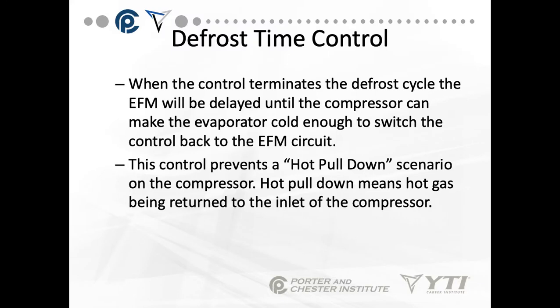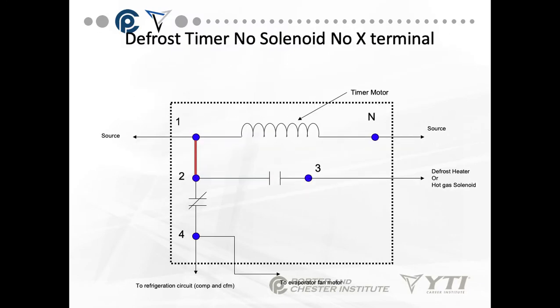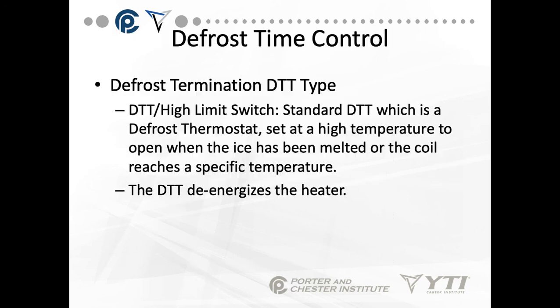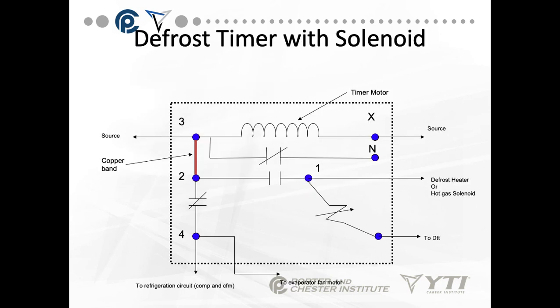Back to these diagrams — they're pretty important because you have to know what connects where. These don't have a defrost thermostat, but this one does. The clutch solenoid in the middle actually pushes the timer motor forward and will push the system out of defrost when the temperature of the coil gets hot enough. Whenever you have a chance, use the ones with the termination if at all possible.